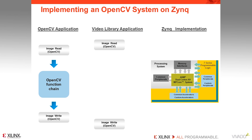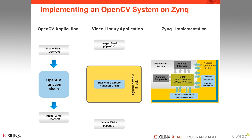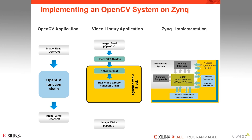The part of the algorithm to be accelerated in the programmable logic can be converted to use functions from the HLS video library. This C code will be synthesized using Vivado HLS and implemented in the programmable logic. The HLS video library functions ensure this C code is synthesized into a high-performance FPGA implementation. The video library also provides functions to convert standard OpenCV data types to those supported in an AXI4 protocol. These I/O functions are used on both the input and output side, ensuring the data transfer between the ARM processor and the programmable logic is implemented as an AXI4 stream, allowing the synthesized block to be easily integrated into the system.